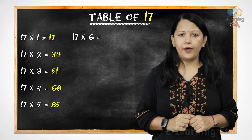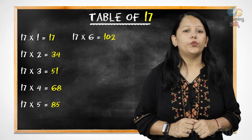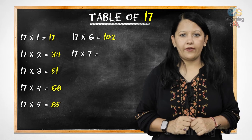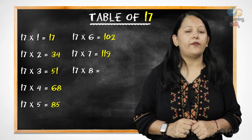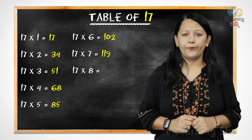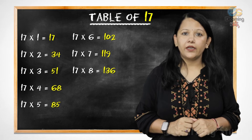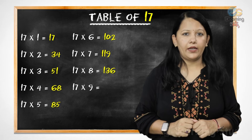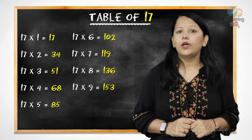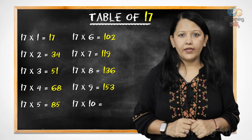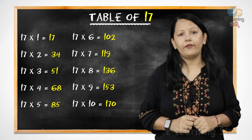17 sixes are 102, 17 sevens are 119, 17 eights are 136, 17 nines are 153, 17 tens are 117.